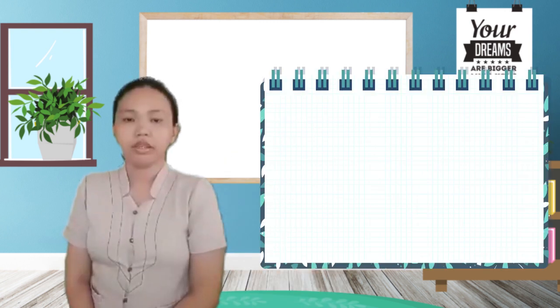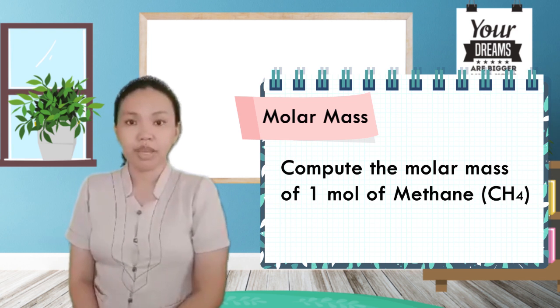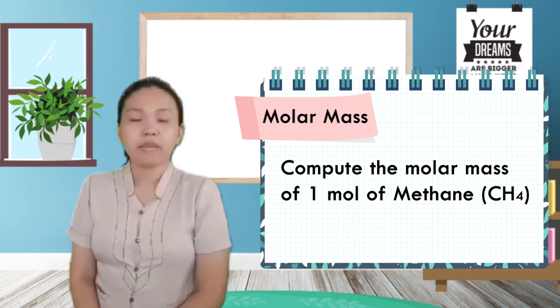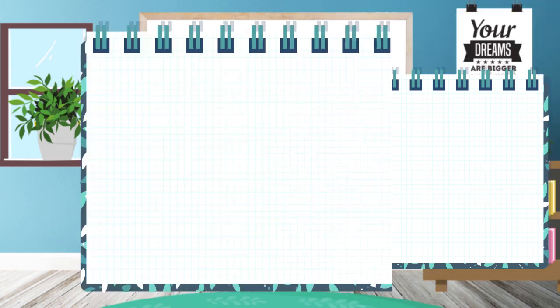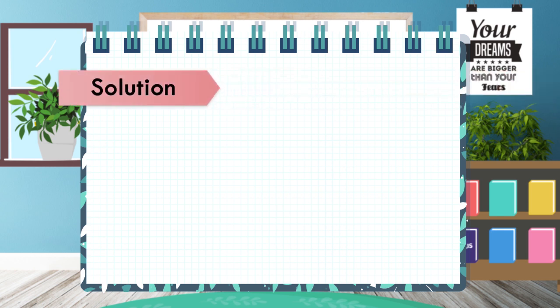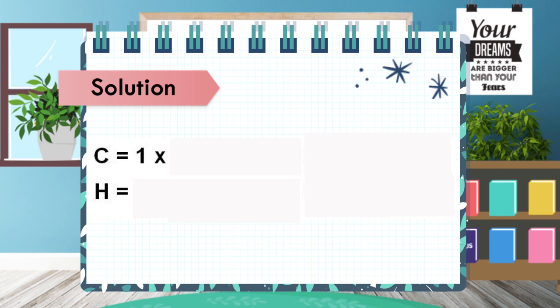Next, let's learn how to calculate the molar mass of a compound. The mass of 1 mole of methane, or CH₄, can be computed by adding the masses of both carbon and hydrogen. To solve this, let's first find out the number of moles per element. There are two elements: carbon and hydrogen. There is 1 mole of carbon and 4 moles of hydrogen.